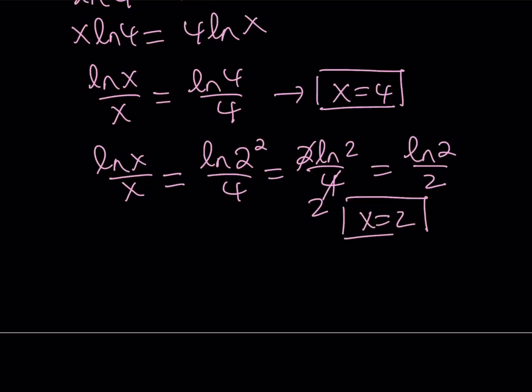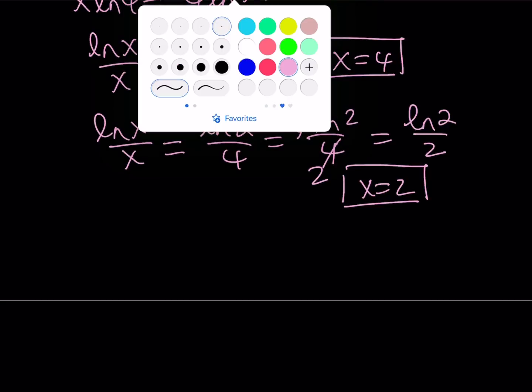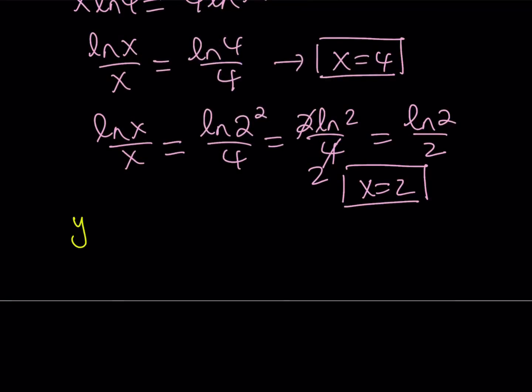It's an interesting identity that ln 4 over 4 is the same as ln 2 over 2 — the value is about 0.35. So x equals 2 and x equals 4 are solutions. But are there any other solutions, and why are there two solutions? Let's take a look at the function y equals ln x over x.